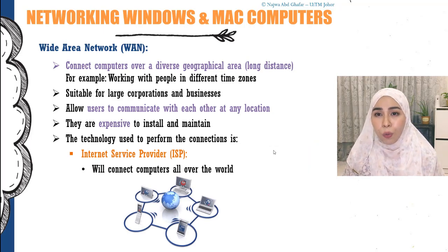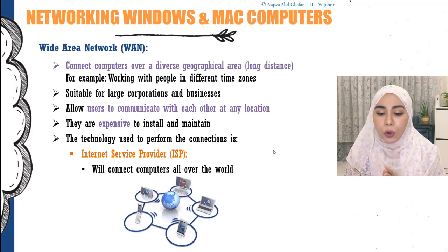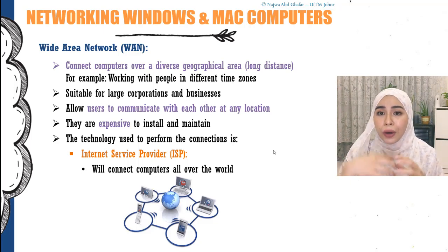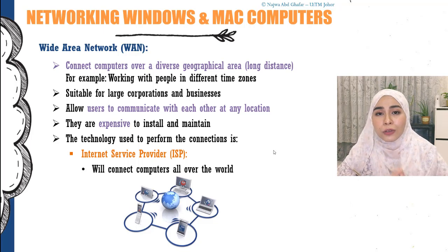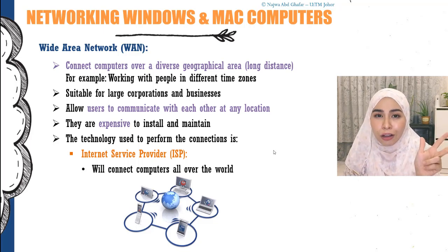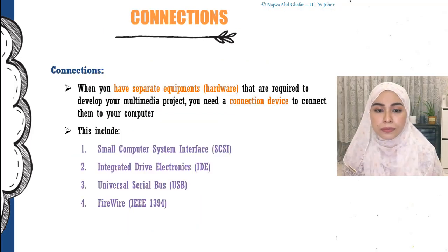A WAN, or Wide Area Network, is able to connect computers over a long distance. For example, if you are in Malaysia and have a friend in the UK, you can send messages or emails through a WAN. The internet is one example of a WAN. To access a WAN, you need an Internet Service Provider (ISP) such as Maxis or TM, which provides internet connectivity to users who want to communicate with computers worldwide.